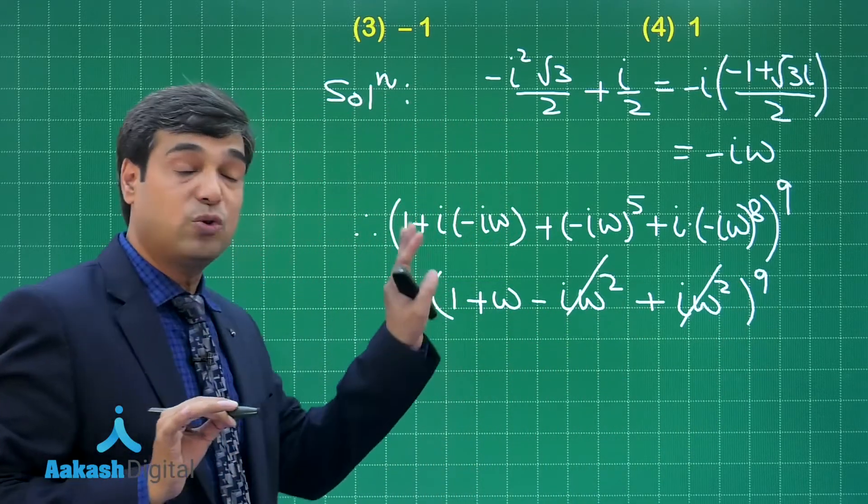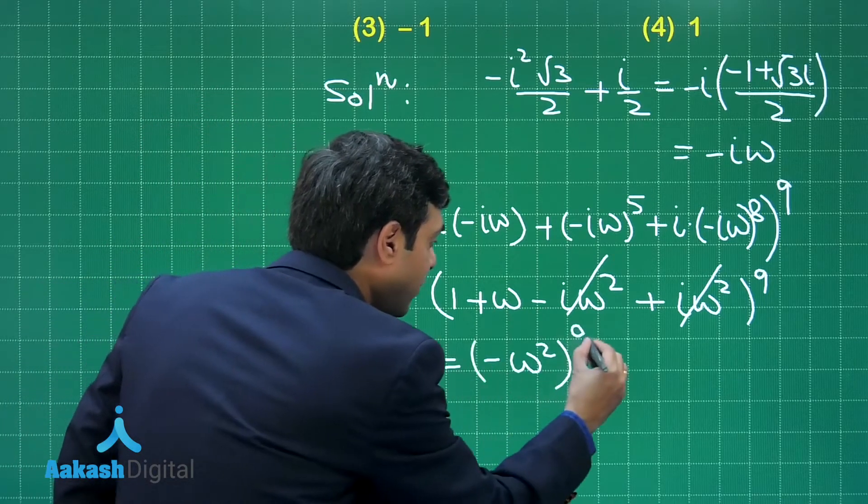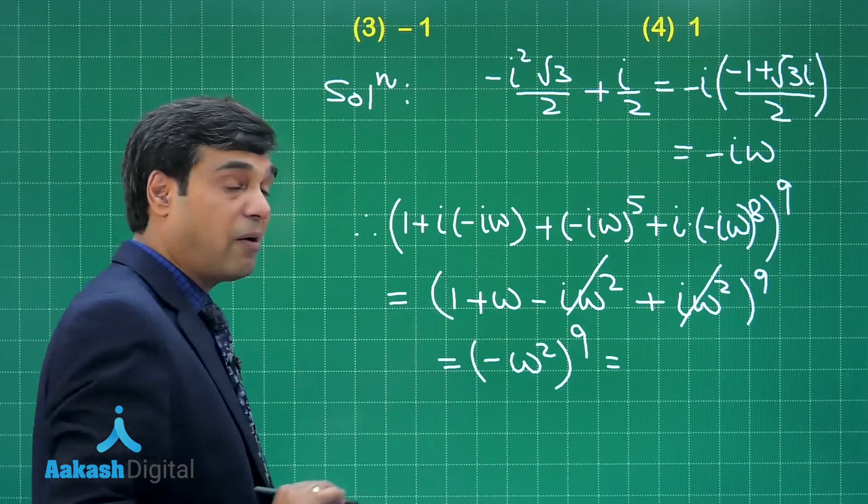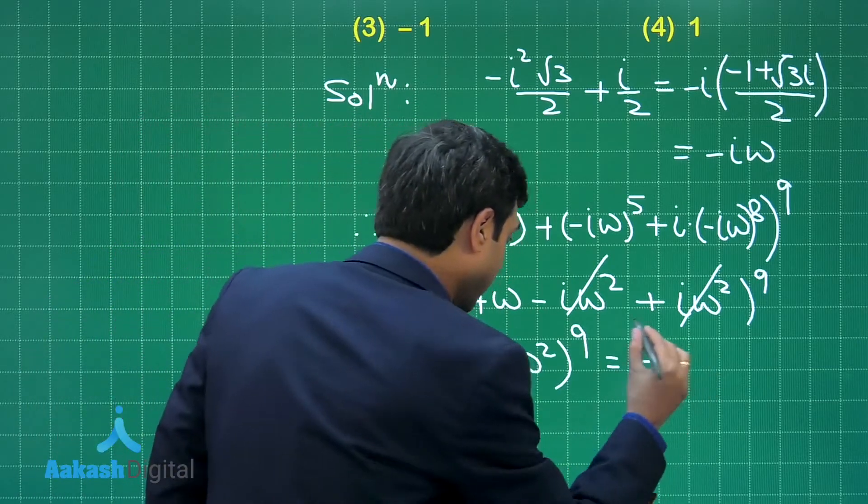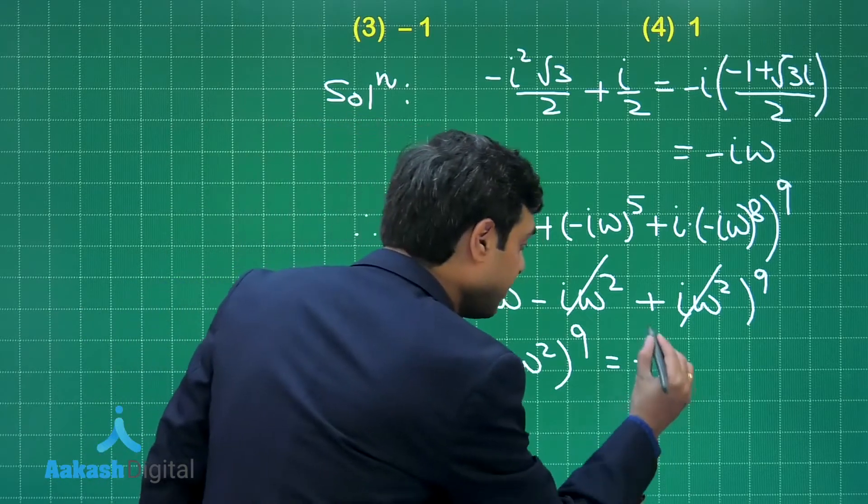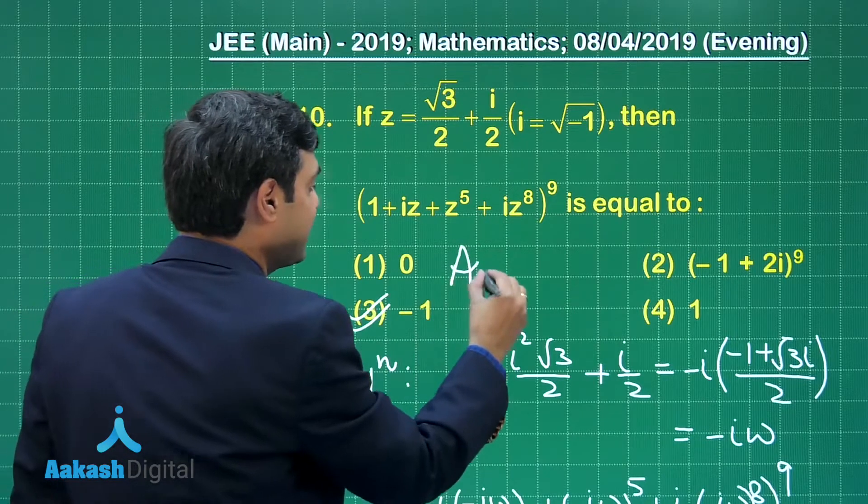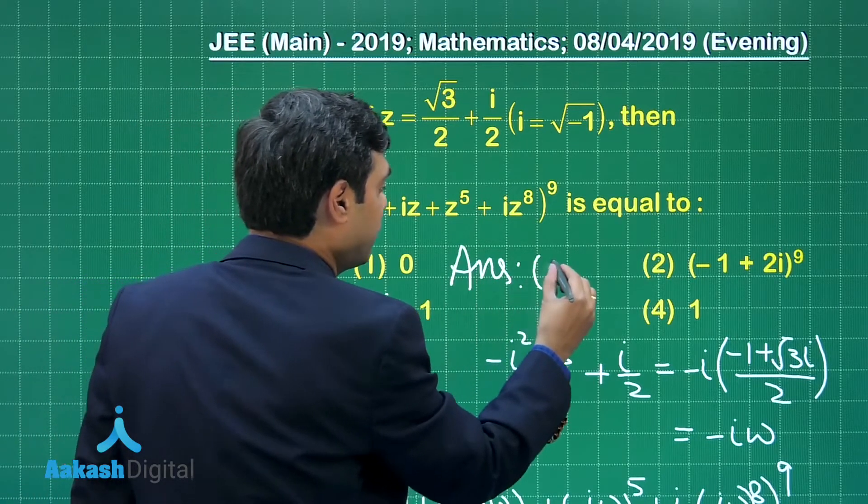We are left with (1 + ω)⁹. That is (-ω²)⁹. Now -1 to the power 9 is negative. So write here minus. ω¹⁸ is 1, so it is simply -1. So let us see from the given options, -1, that is option number 3 is the correct answer for this question.